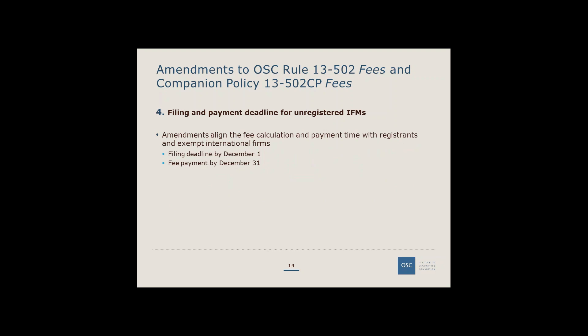The amendment to filing requirements for unregistered IFMs aligns their deadlines with other firms. Previously, unregistered IFMs had to file and pay within 90 days after their financial year end. Now the filing deadline is December 1st and the payment deadline is December 31st, the same as all other firms.